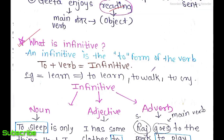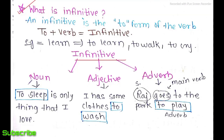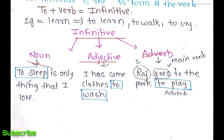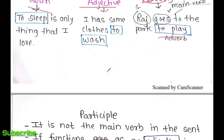Now we move towards the infinitive. The infinitive is the 'to' form of the verb — simply, to plus verb equals infinitive. For example: to learn, to walk, to cry. The infinitive can function as a noun, as an adjective, or as an adverb. Example: 'To sleep is the only thing that I love' — here, 'to sleep' is at the beginning of the sentence, so this is obviously the noun form. As an adjective: 'I have some clothes to wash.'